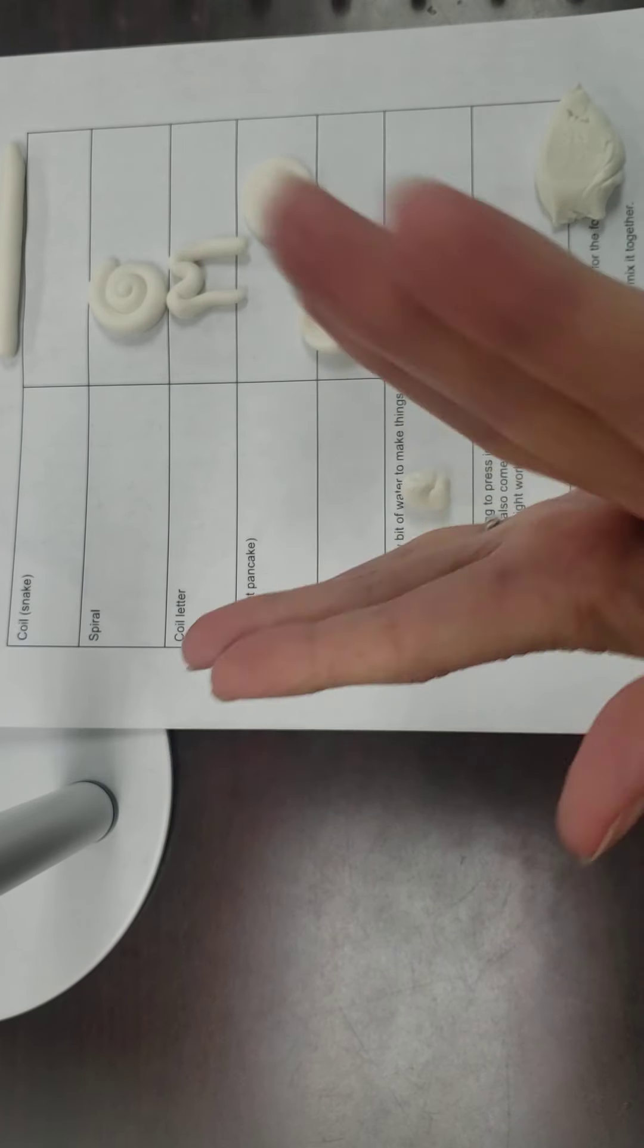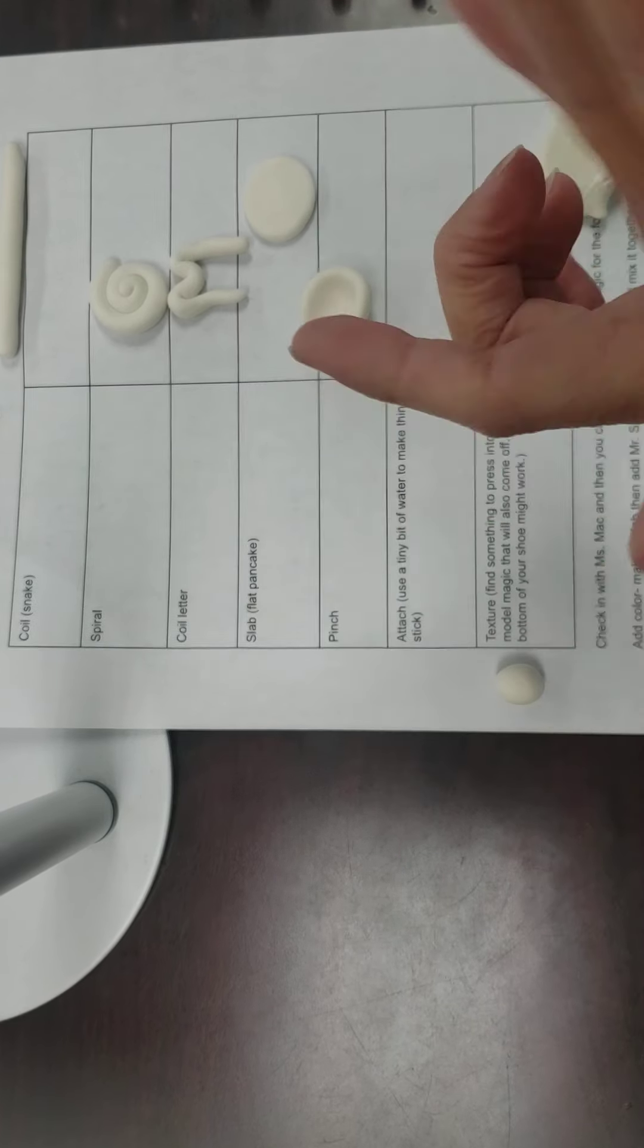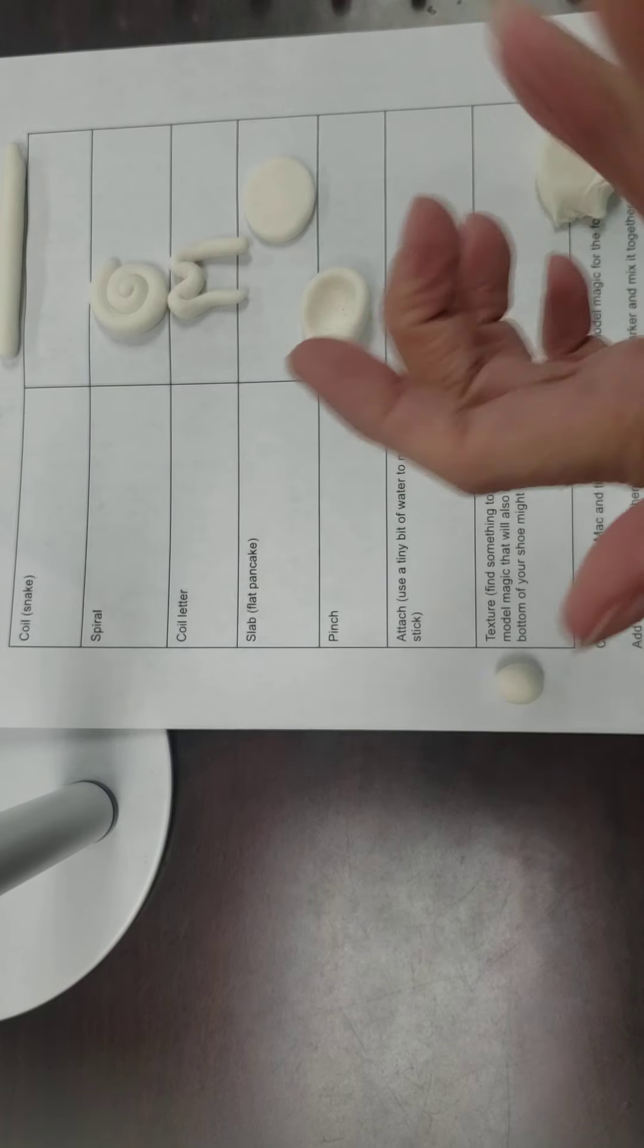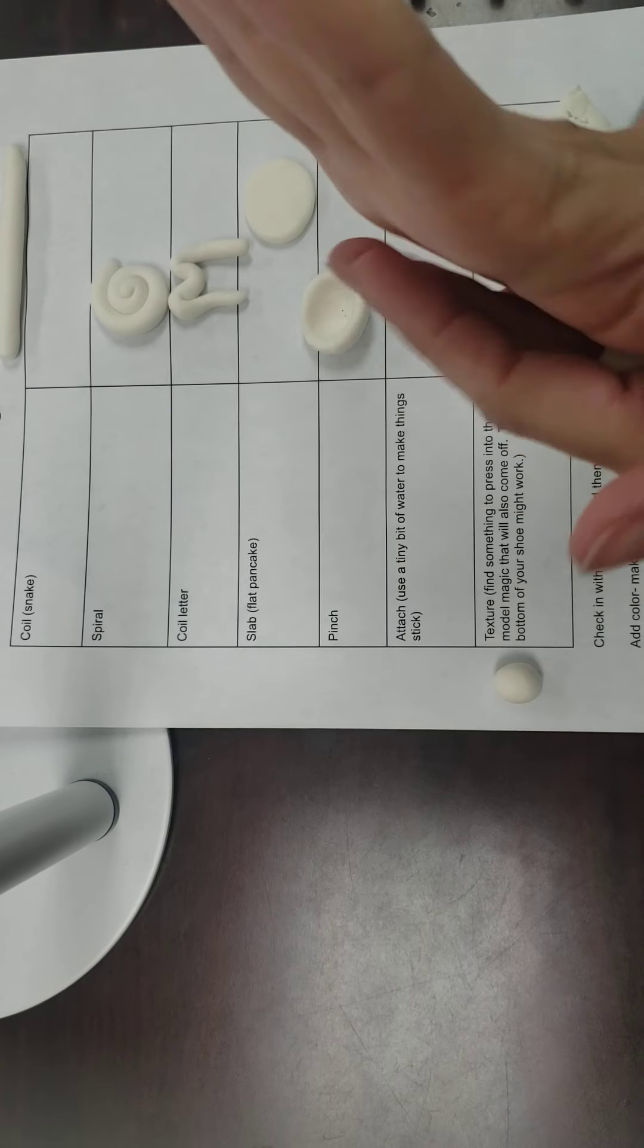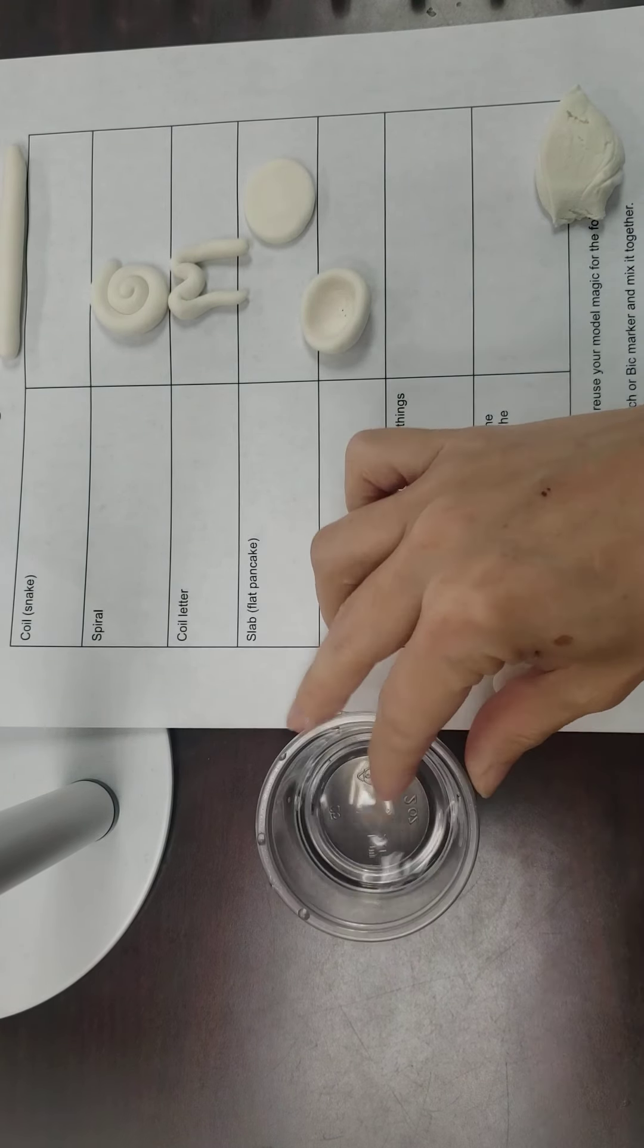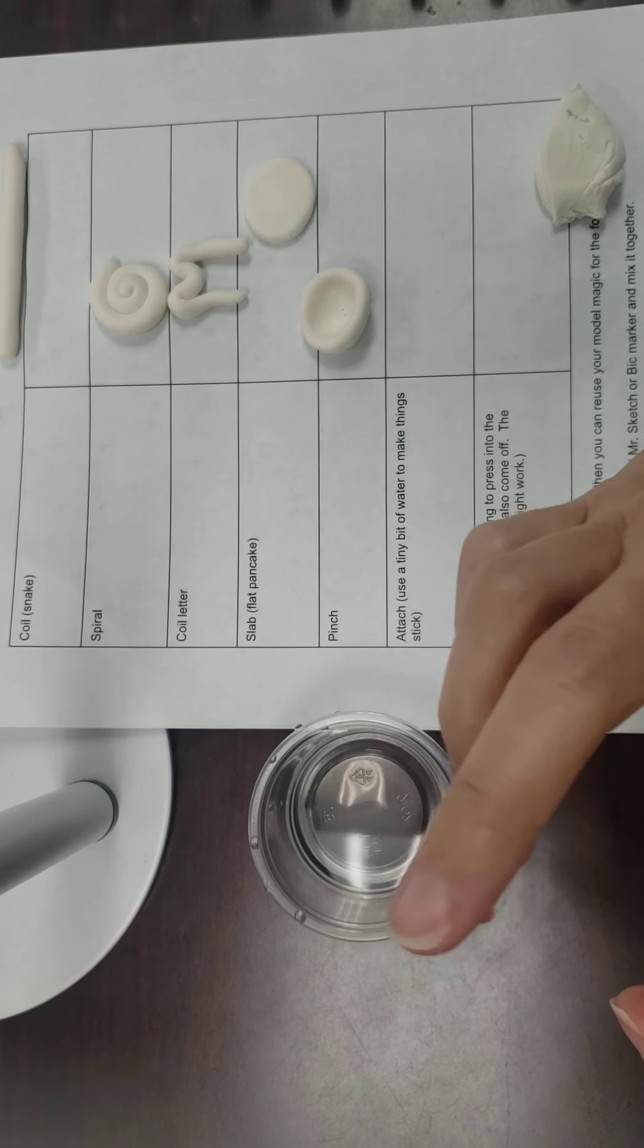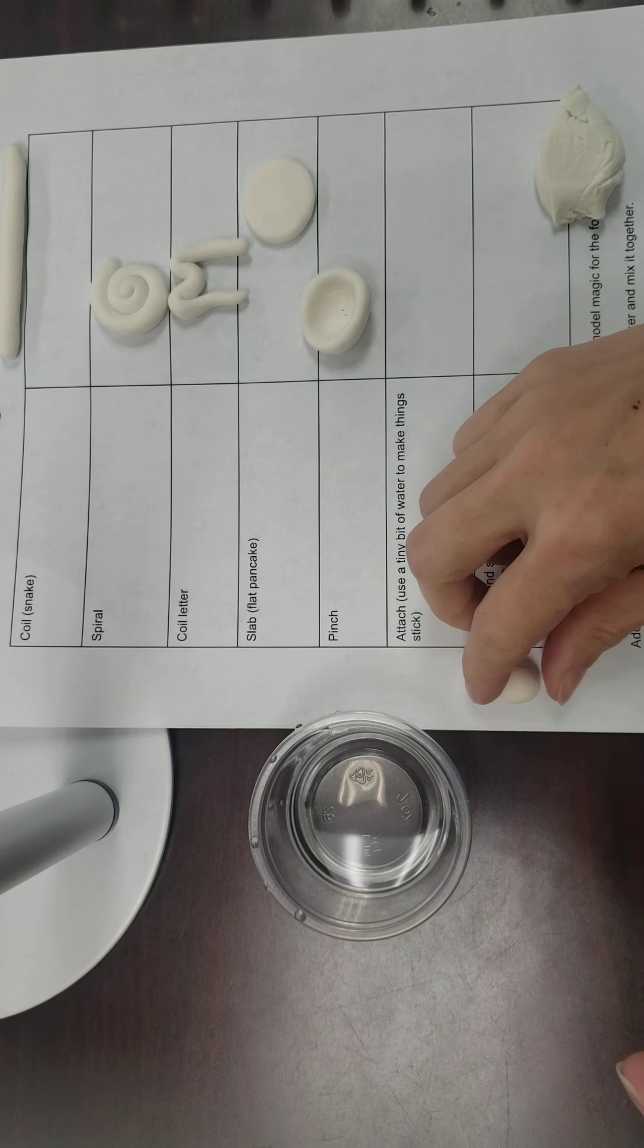Now with model magic, this is where it is different than clay. With clay you would need to do a certain process to attach, which we'll learn more about, but for the model magic you simply can just use a little tiny bit of water. Makes it a little sticky.